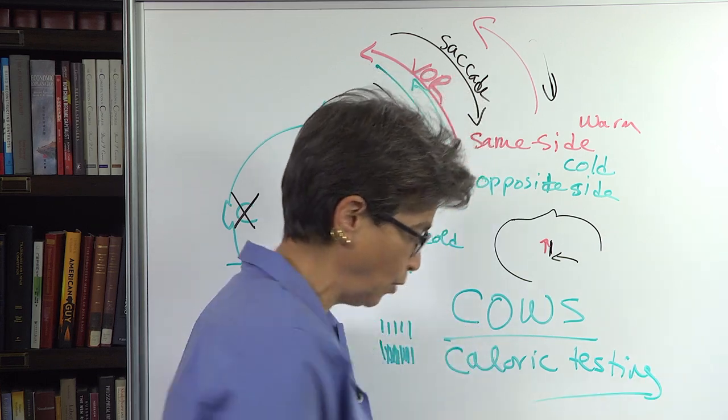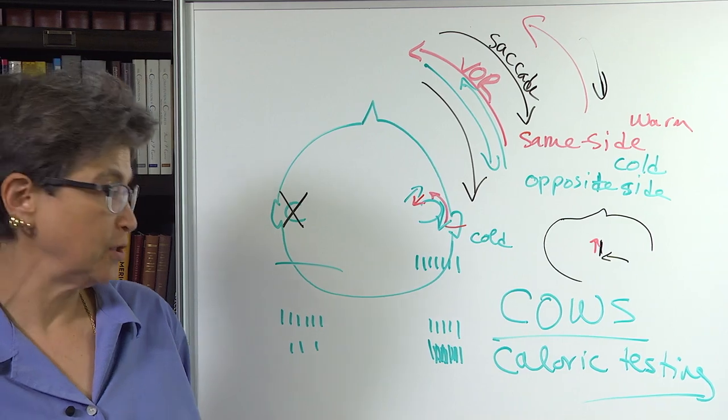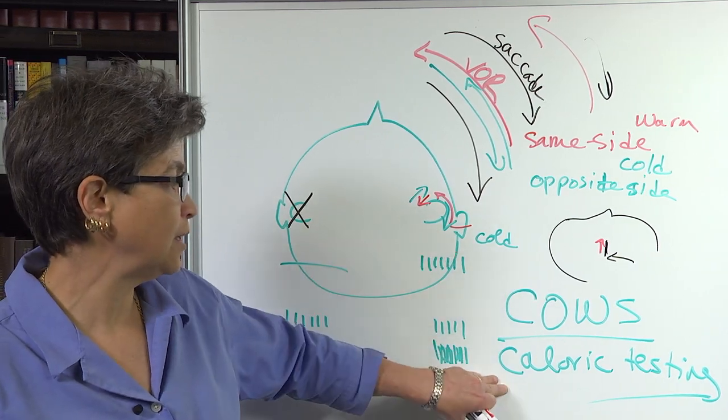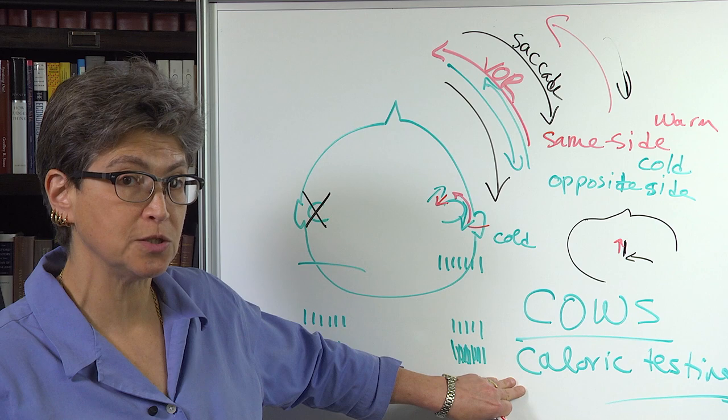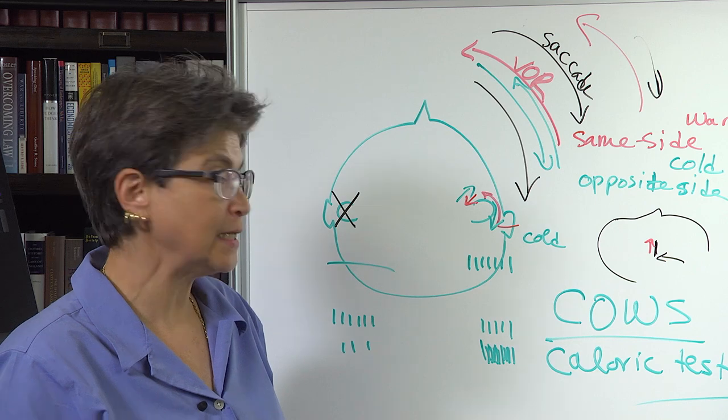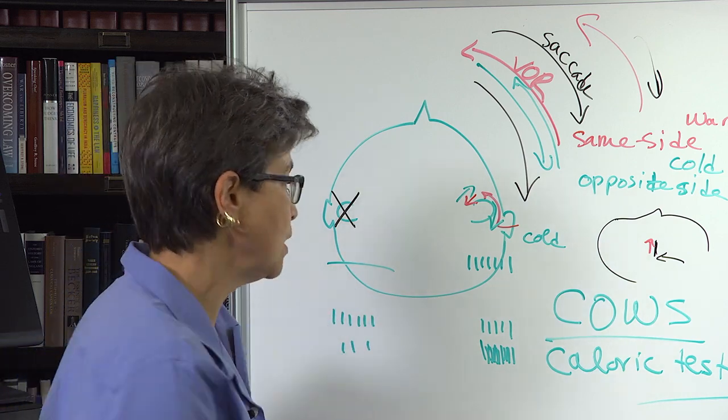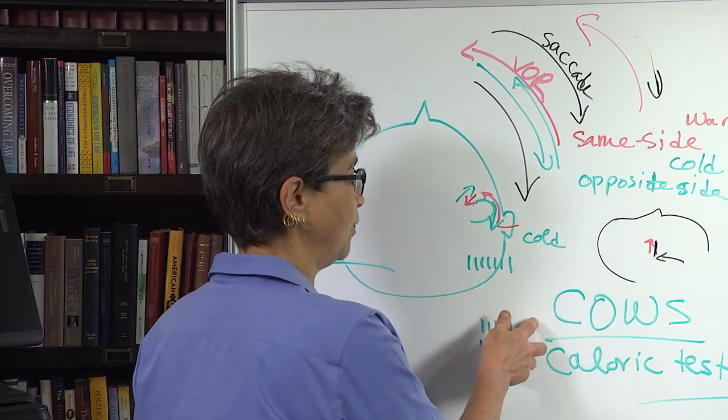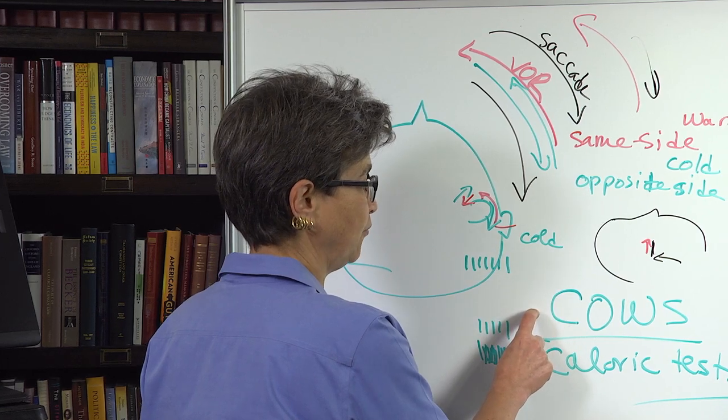And caloric testing is a very valuable way to test the peripheral vestibular function. If the vestibular apparatus is working, then you will get these responses. You will get this cold opposite nystagmus, warm, same side nystagmus, ipsilateral beating nystagmus. And it's more reliable than just having somebody do this where they can really rely on visual feedback as well. So COWS is a very valuable test for vestibular function.